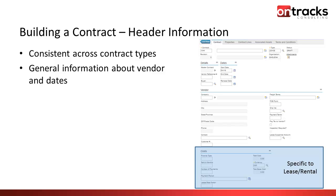Company information is included on the header — once you identify the company, it will populate its address and any shipping or freight terms associated with that company. Something specific to lease and rental contracts at the bottom of the screen: this is where we define if it's a lease, the term length such as 36 months, how many payments are being made, and how the payment arrangements are factored in.